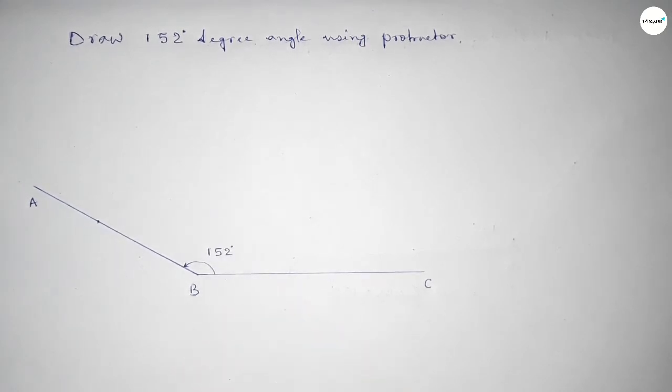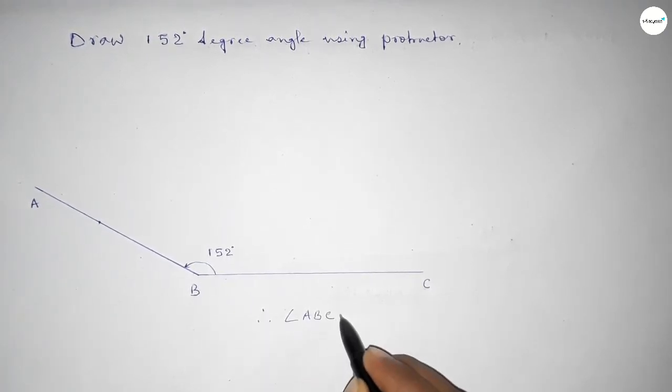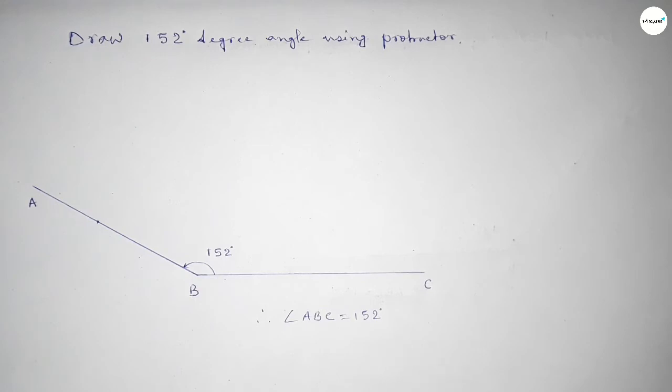So therefore, angle ABC equals 152 degree angle. That's all, thanks for watching. If this video is helpful to you, then please share it.